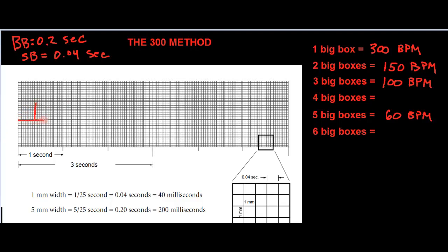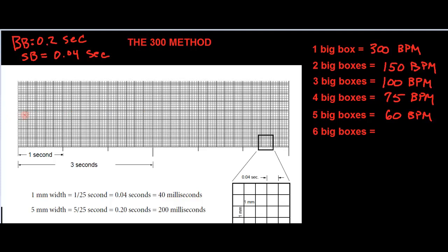How about if they are four boxes apart — one, two, three, four — consistently? If they're four boxes apart, that would be half the speed of two boxes apart, so it would be half the heart rate. Instead of 150, we would have 75 beats per minute.